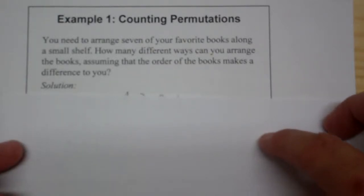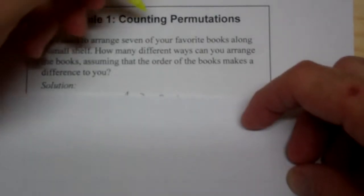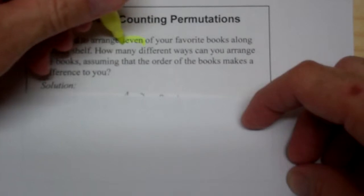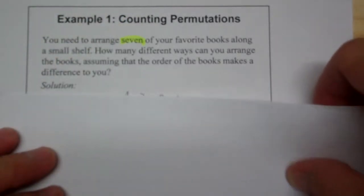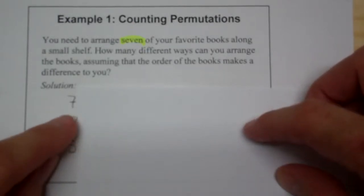Well let's think about the fundamental counting principle. For example, you have seven books that you're picking from. So if you have seven books that you're picking from, you're going to pick one out of the seven books. So you have seven, right?